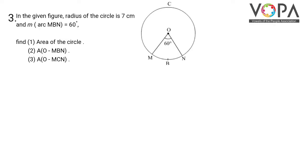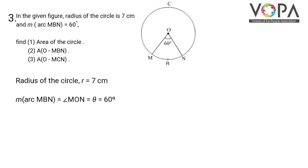In the given figure, the radius of the circle is 7 cm and major arc MBN is 60 degrees. We need to find the area of the circle, area of sector O-MBN, and then area of sector O-MCN. Here, radius of the circle is given as 7 cm and major arc MBN, which equals the central angle — that is angle MON, theta — is equal to 60 degrees.